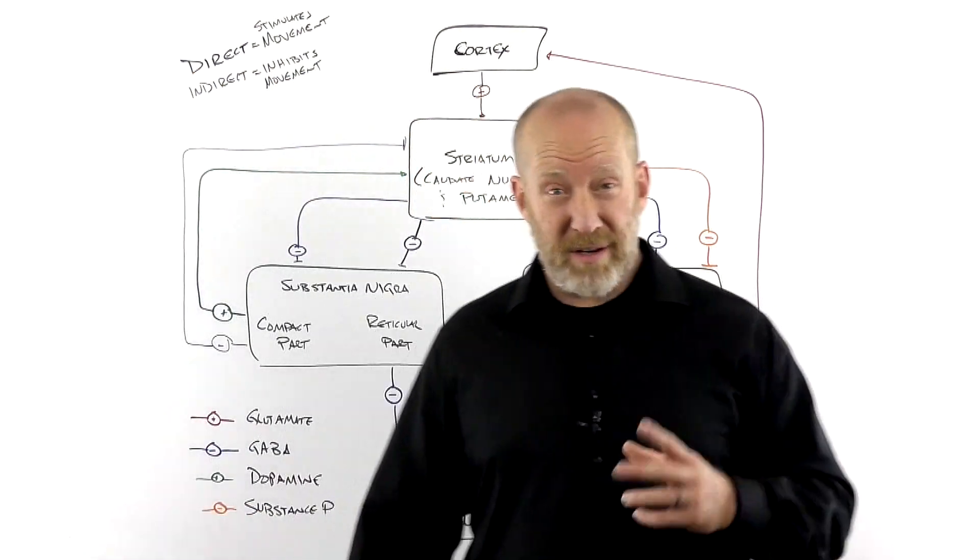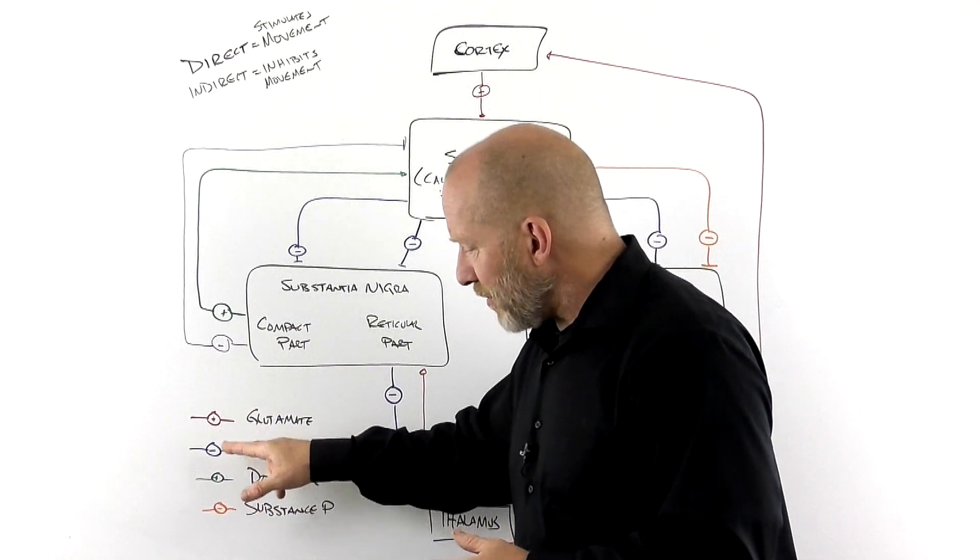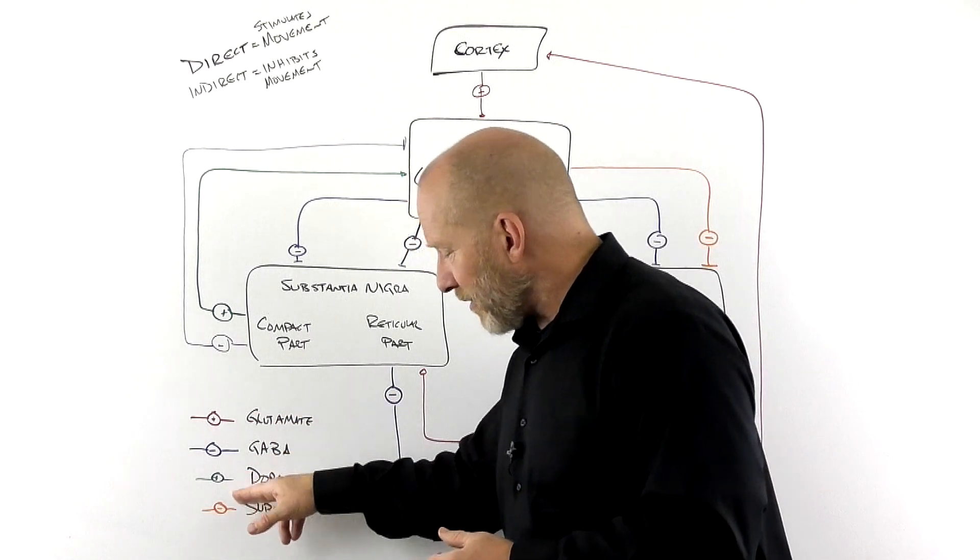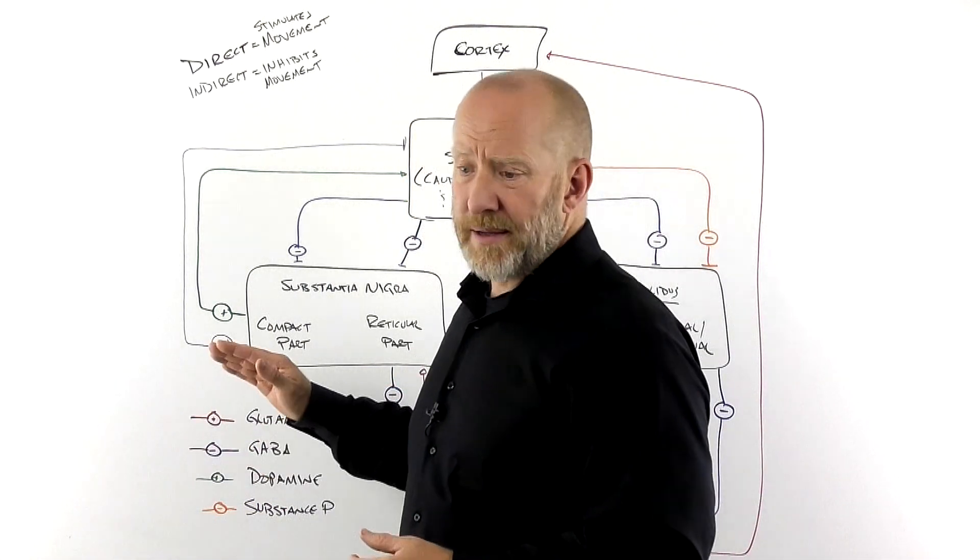And we have some color-coded neurotransmitters. Glutamate in red, stimulatory, GABA in blue, inhibitory, dopamine, in this case, stimulatory in green, and substance P, I'm not going to talk about, but it's on here, inhibitory in orange.